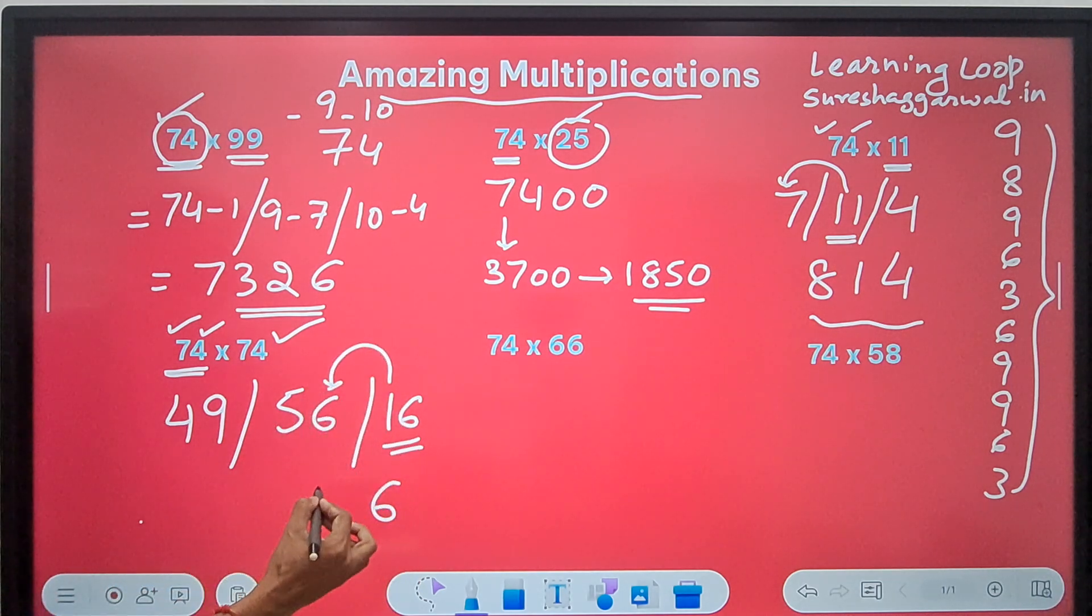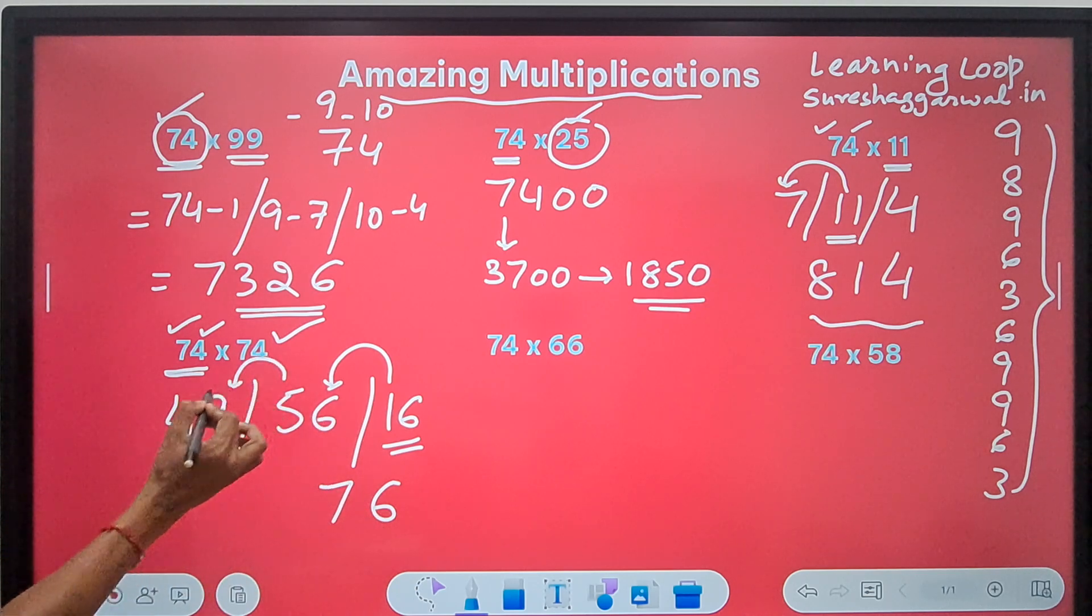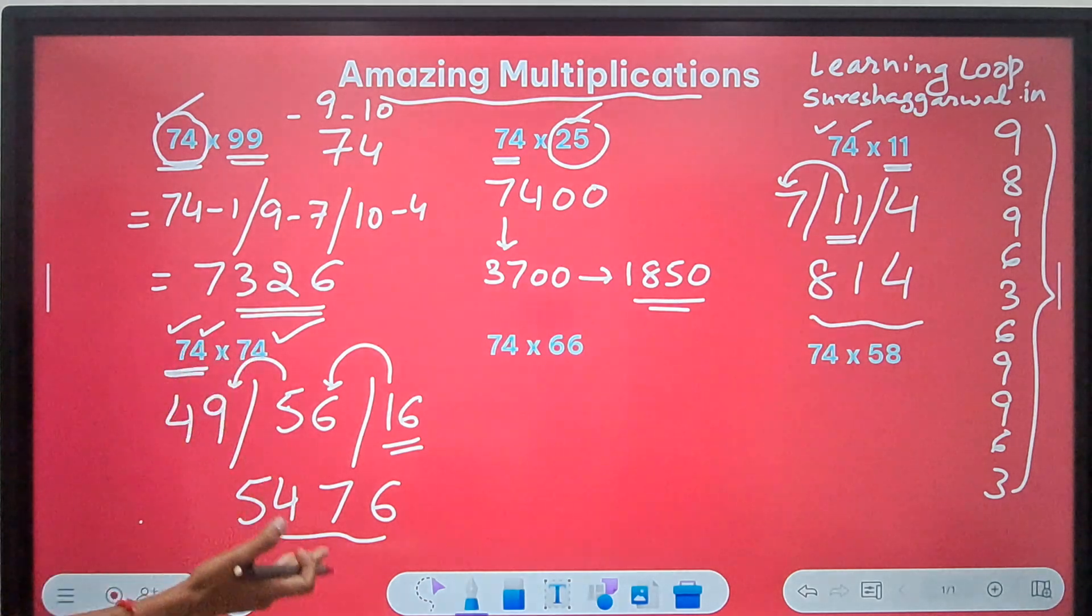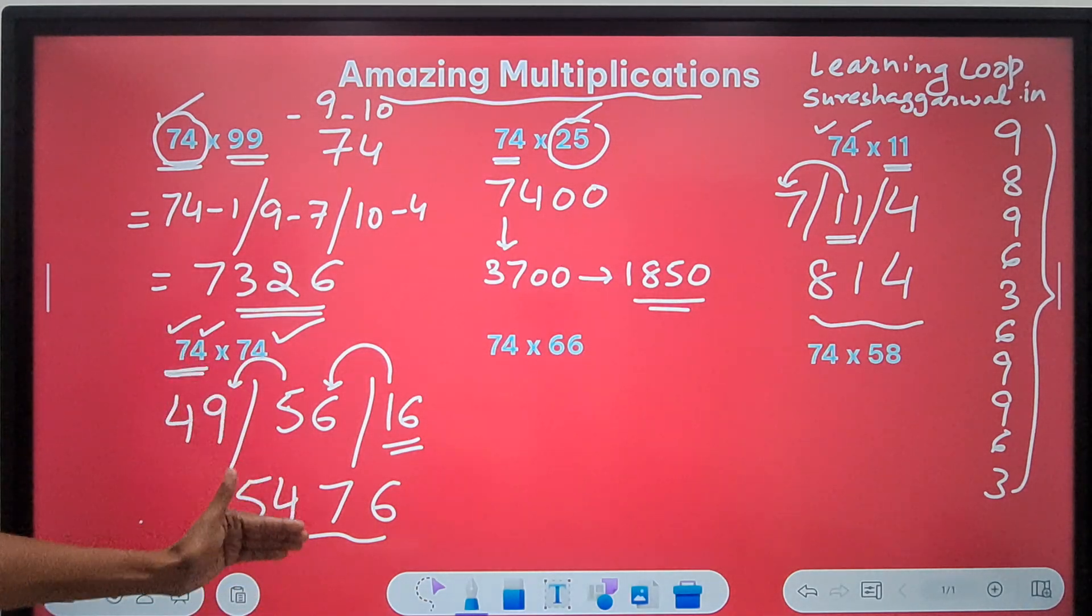So, 7. 5 carried. 49 plus 5 is 54. And here, we have the square of 74 or 74 times 74.